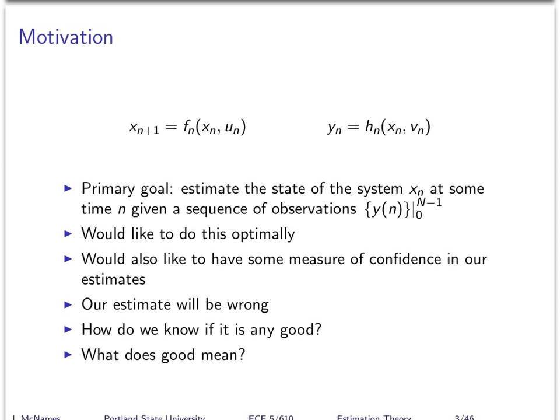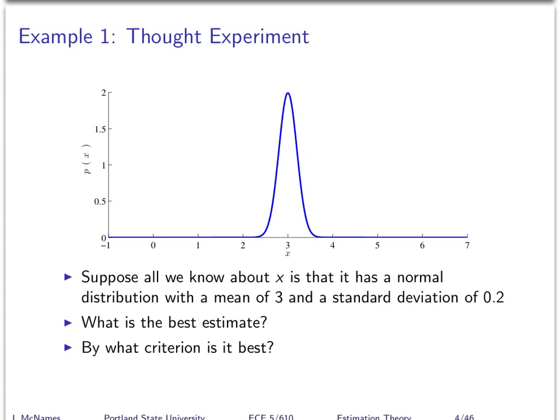We know our estimate could be wrong, and we'd like to be able to say whether our estimates are any good, and be precise about what we mean by 'good.' So there are some underlying ideas we've got to cover before we start creating an estimate. First example — just a thought experiment. Suppose all we know about x is that it has a normal distribution with a mean of 3 and a standard deviation of 0.2. What is the best estimate of x given just that information? And the answer, by almost any measure, is 3.